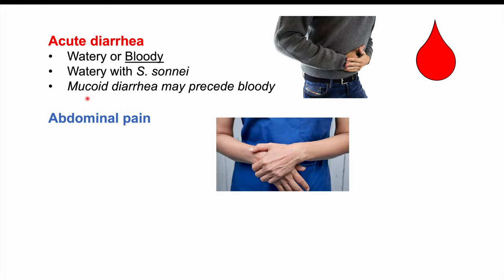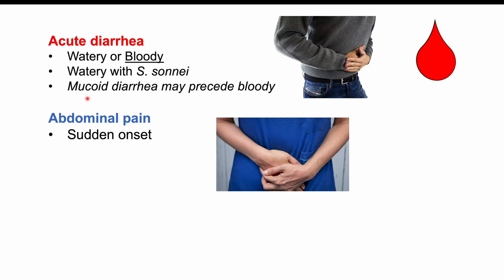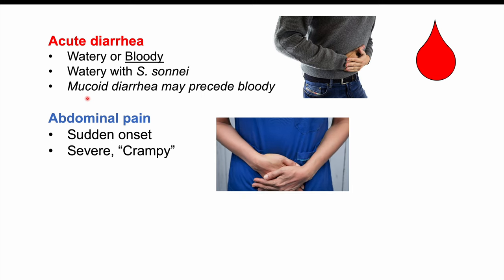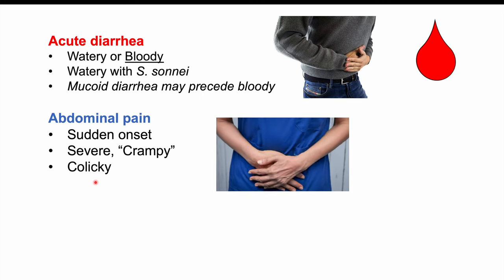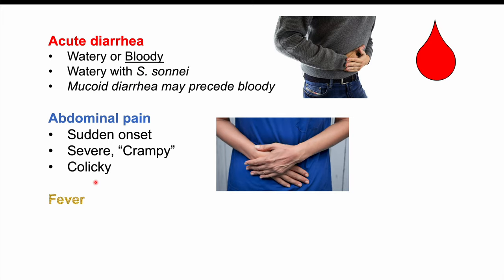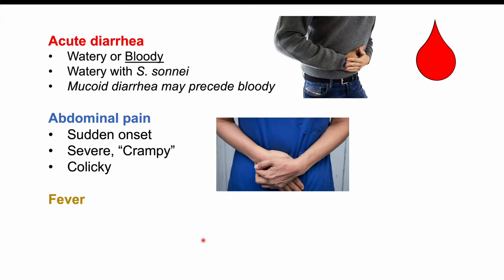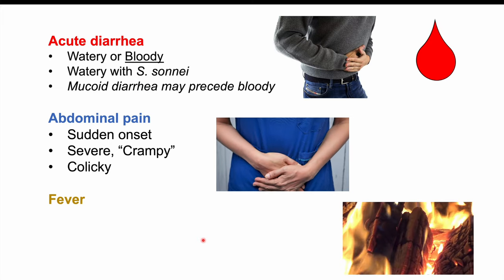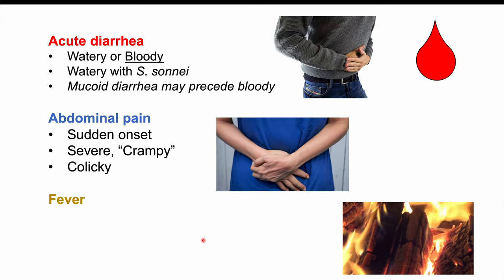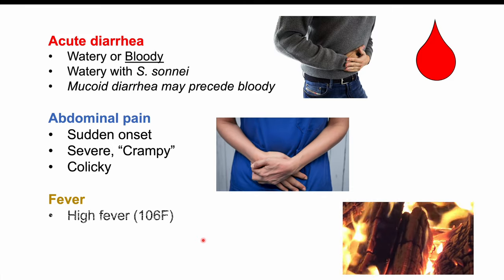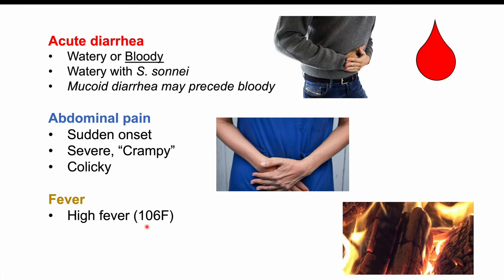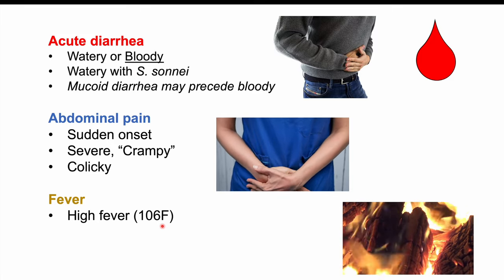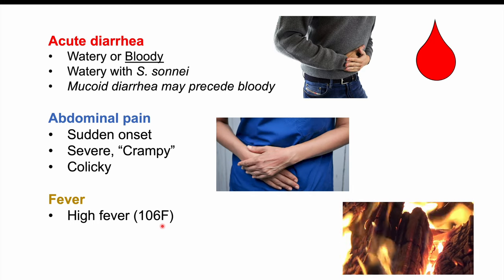Abdominal pain also occurs, with sudden onset, very severe and crampy — often colicky, coming in waves. A very high fever is another key characteristic of Shigella infection, up to 106 degrees Fahrenheit or 41 degrees Celsius.